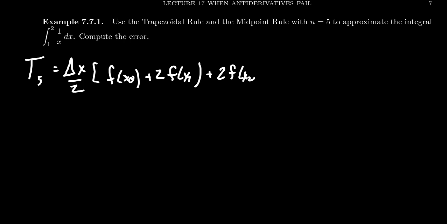2 f of x2 plus 2 f of x3 plus 2 f of x4 and then finally we get f of x5.